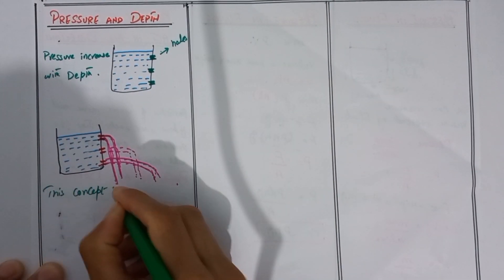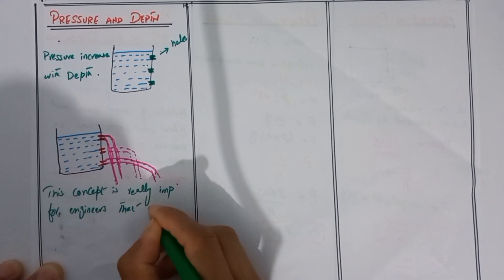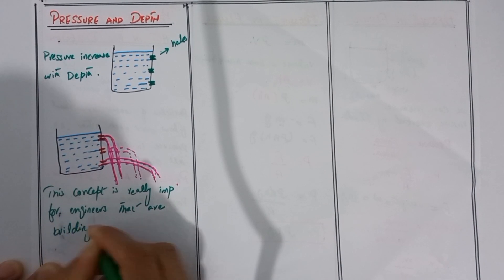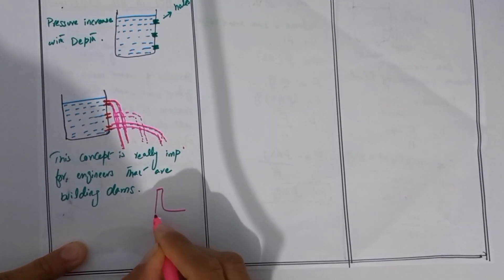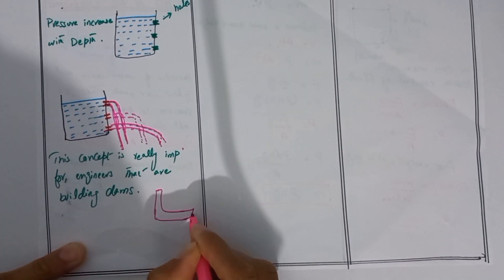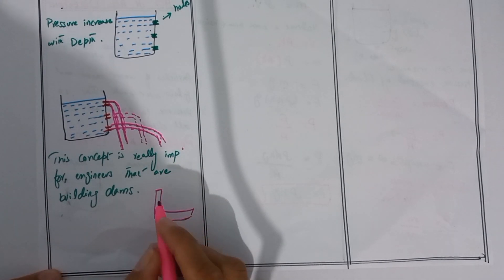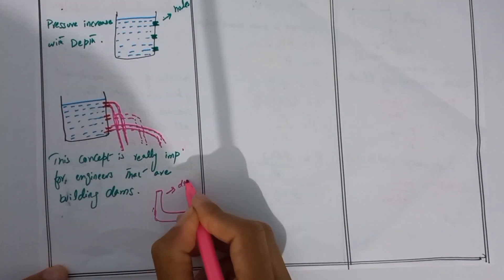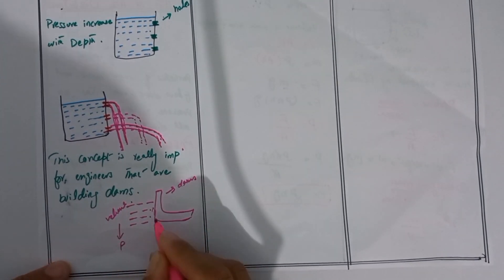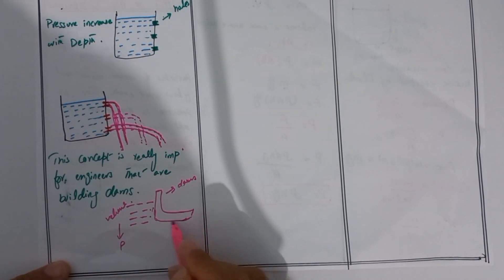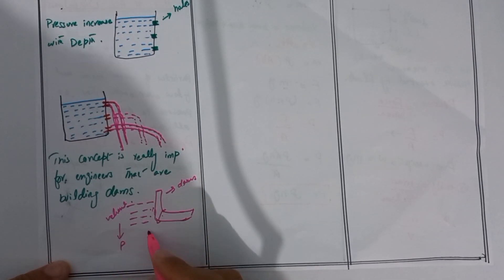This concept is really important for engineers building dams, because the dam wall holds a large volume of water. Since pressure increases with depth, the walls of dams are made much thicker at the bottom to withstand the greater pressure and force from the large volume of water behind them.